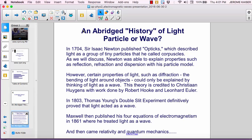In 1704, Sir Isaac Newton published Optics, which described light as a group of tiny particles that he called corpuscles. As we will discuss, Newton was able to explain properties such as reflection, refraction, and dispersion with his particle model.